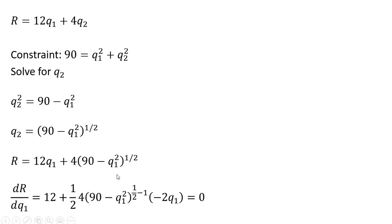Then we're going to subtract 1 from that exponent, so 1 half minus 1. And then we're going to take the derivative of what's in parentheses here, which will be minus 2q subscript 1. And that's going to be all multiplied through. We're setting equal to 0 because we're maximizing.